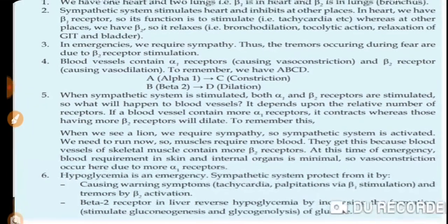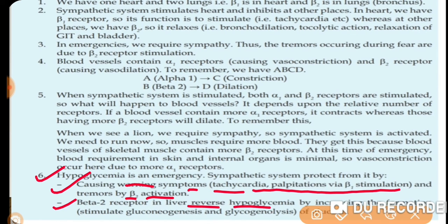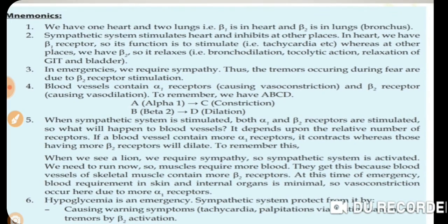To remember this, consider hypoglycemia as an example of an emergency. The sympathetic system helps by stimulating beta-1 receptors in the heart, causing tachycardia and palpitations. Tremors develop due to beta-2 activation. Beta-2 receptors in the liver reverse hypoglycemia by increasing glucose formation through gluconeogenesis and glycogenolysis — breaking down glycogen and converting non-carbohydrate sources like proteins and fats into glucose. This is how beta-2 receptor activation reverses hypoglycemia.